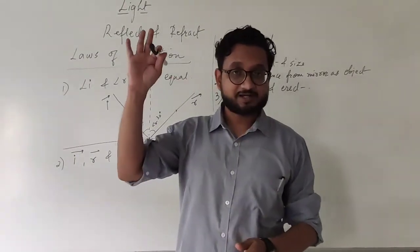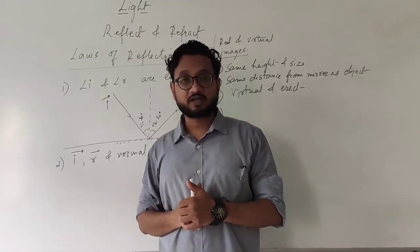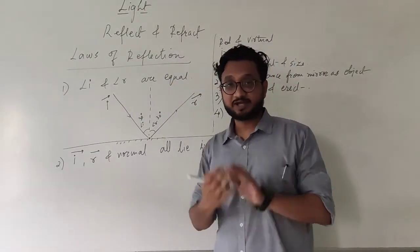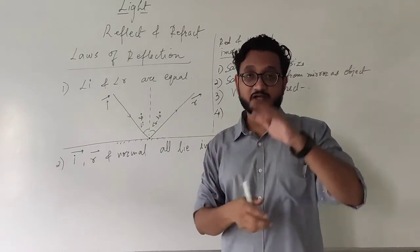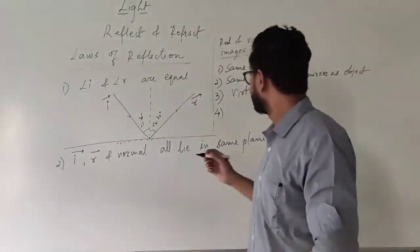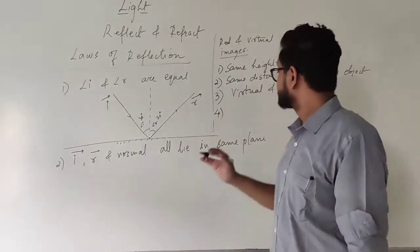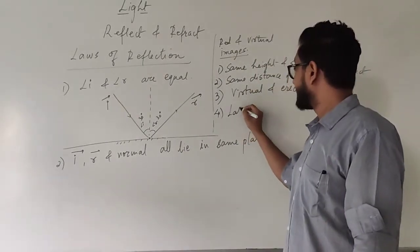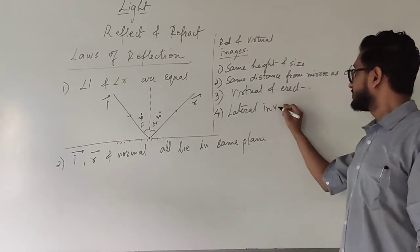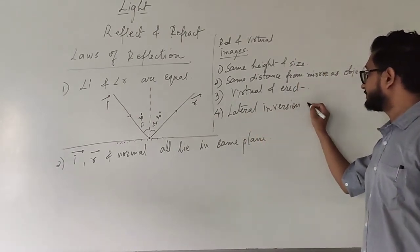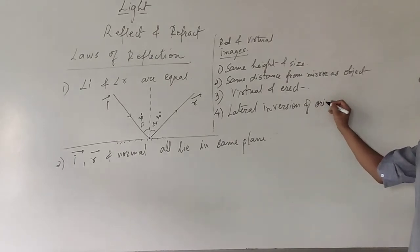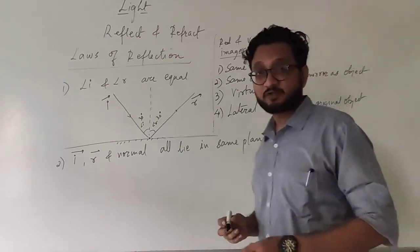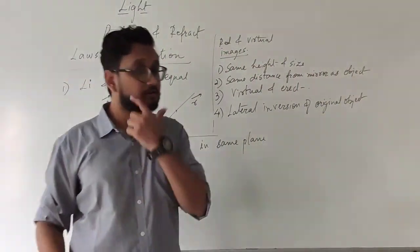The fourth property: if you raise your right hand, the image inside will raise its left hand. This phenomenon is called lateral inversion — not upside-down inversion, but horizontal inversion. It is a flipped image. So the image will be the lateral inversion of the original object.